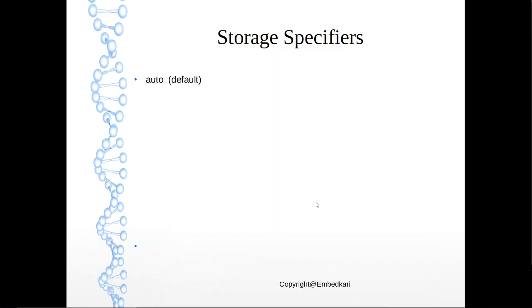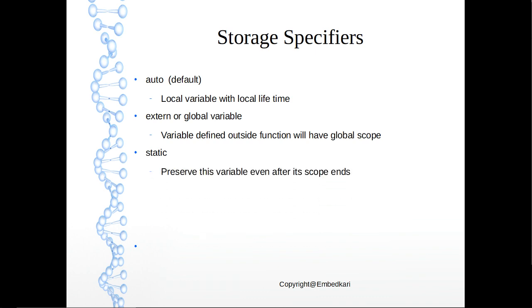Next, storage specifiers. Auto: by default, the data type storage space will be auto. So local variable with local lifetime means that variable life will end after its scope is over. External or global variables will be basically the variable defined outside a function will have global scope, and some will have, let's say, file scope or external, like from other files also. And static will basically preserve the value even after its scope ends.